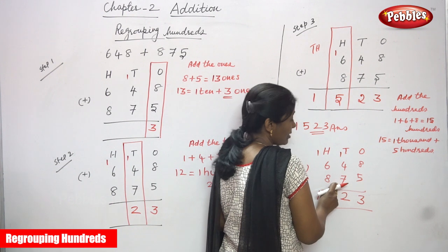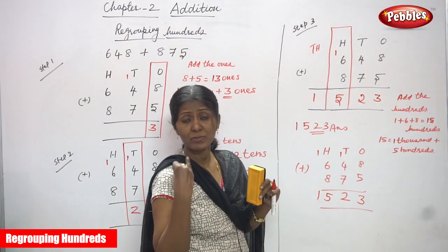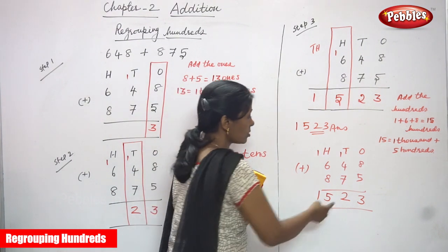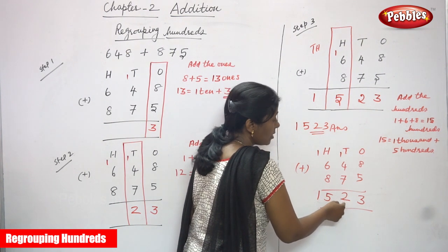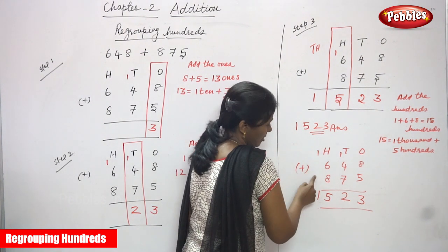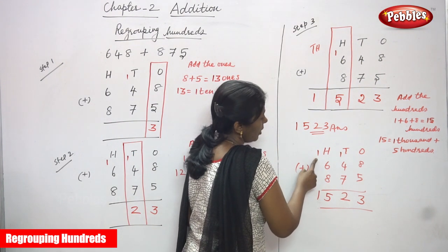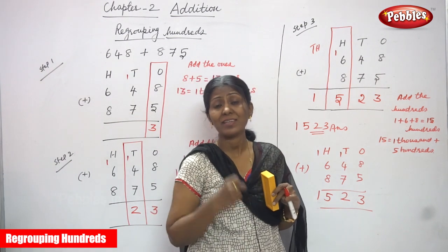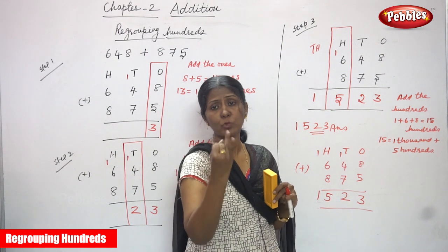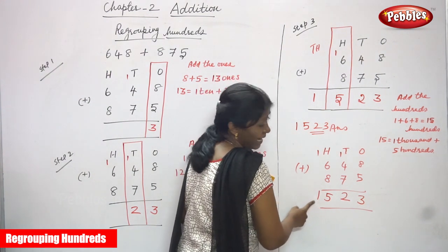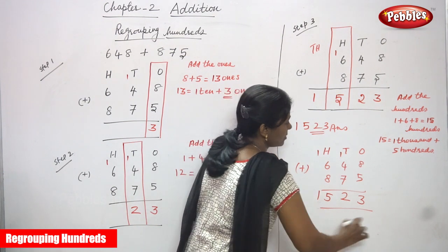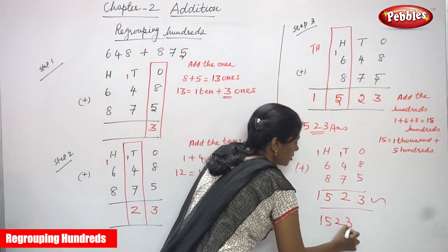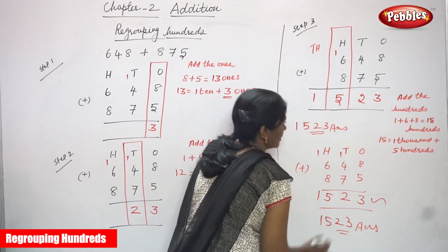So 1 plus 4 is 5, and 5 plus 7: keep 5 in the mind and count 7 fingers after 5 — that is 6, 7, 8, 9, 10, 11, 12. So 2 tens, and 100 carries over to the hundreds place as carryover. Then 1 plus 6 is 7, and 7 plus 8: keep 7 in the mind and count 8 fingers — that is 8, 9, 10, 11, 12, 13, 14, 15. So 5 hundreds and 1 thousand. The same answer: 1, 5, 2, 3. This is the right answer.